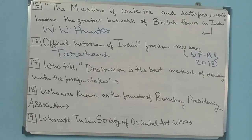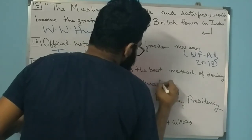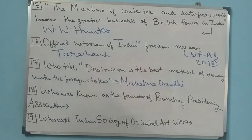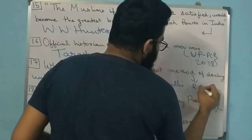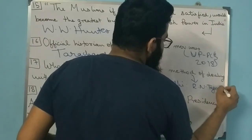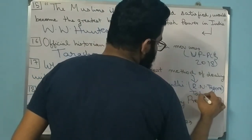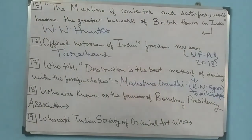Question 17: Who told that destruction is the best method of dealing with foreign clothes? The answer is Mahatma Gandhi. When we read about the Boycott Movement of 1905, foreign goods including clothes were burned together. Rabindranath Tagore had called this method a total wastage - he said burning foreign clothes was a waste with no benefit.